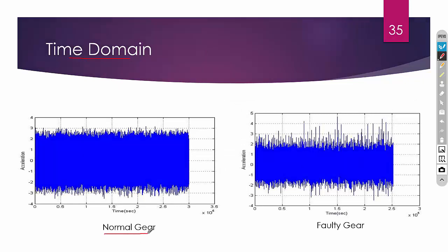This is the time domain signal of a normal gear and a faulty system. Your fault-free system is your standard — you have to compare the faulty system with the fault-free system. In the normal gear vibration signal you can see small peaks and valleys, but not many. If you look into the faulty system, the signal has a lot of peaks and valleys. If your system were 100% pure you would have a sinusoidal wave, but no system is 100% pure, so there will be small deviations.